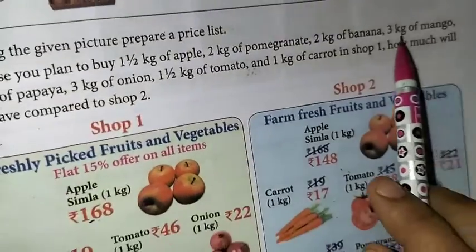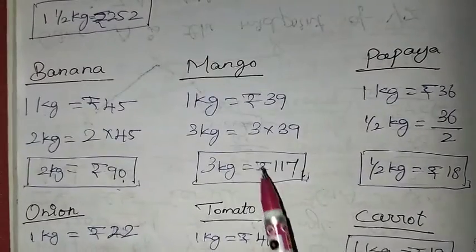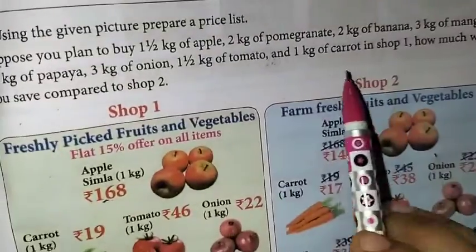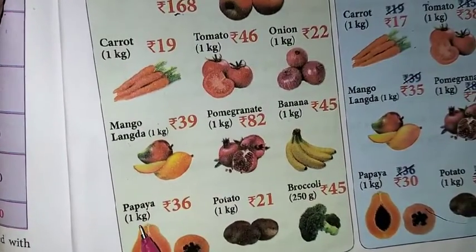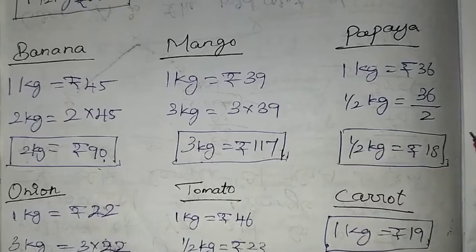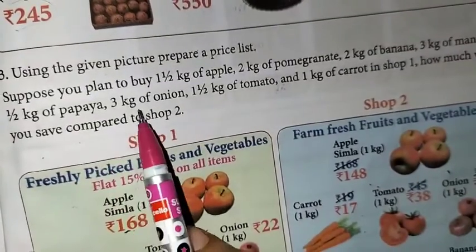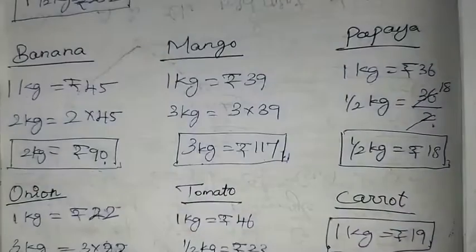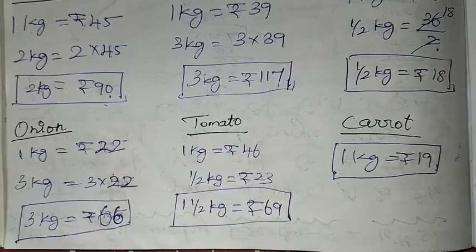Next, mango: 3 kg is needed. For papaya, 1 kg = Rs. 36, so half kg = Rs. 18, and 1.5 kg of papaya = Rs. 54. For onion, 1 kg = Rs. 22, so 3 kg = 3 × 22 = Rs. 66.